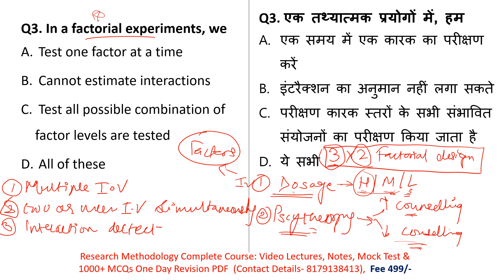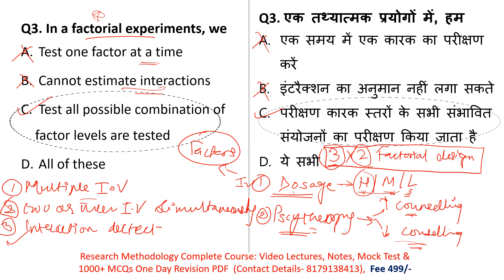Now looking at the question options: Option A says 'test one factor at a time' — incorrect, because in factorial experiments we test multiple independent variables, not just one at a time. Option B says 'cannot estimate interaction' — incorrect, because in point 3 we showed that interactions among variables are studied. Option C says 'test all possible combinations of factors' — this is exactly what factorial experiments do. The correct answer is Option C.